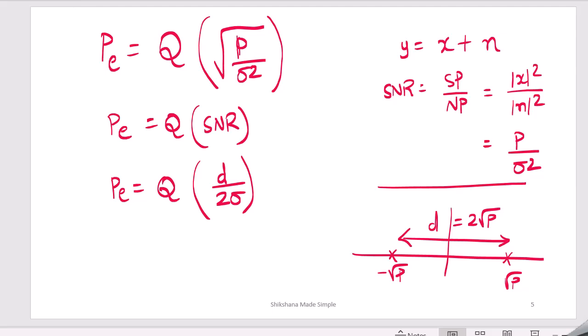So now we have derived the BER of AWGN channel and the relation. We have in terms of distance between the symbol, also we have a relation between SNR and the probability of error.